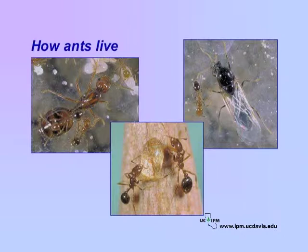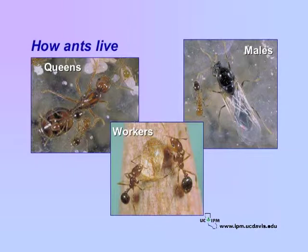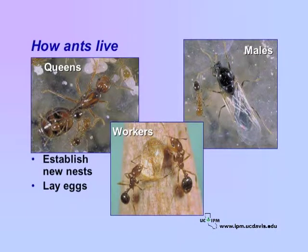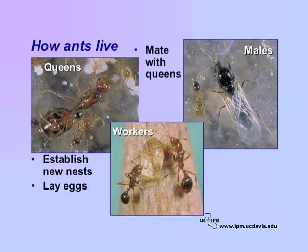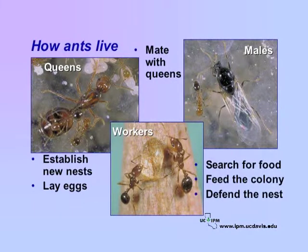Ants are social insects living in large colonies made up of queens, males, and workers. Each has a specific job. Queens establish new nests and lay eggs. Males mate with queens. Worker ants, which are sterile females, search for food, feed the colony, and defend the nest. Understanding these facts about biology is key to developing an effective management program.